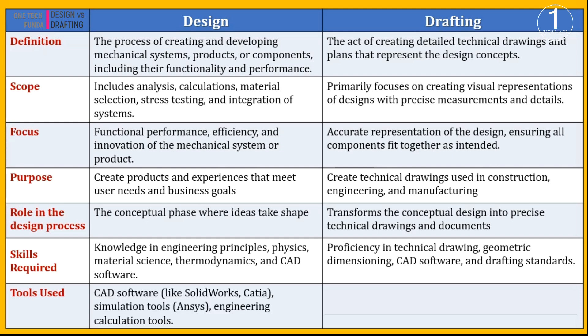In design, CAD software like SolidWorks and CATIA, along with simulation tools like ANSYS, are essential. They help engineers create, test, and refine their designs with precision and efficiency. In drafting, CAD software like AutoCAD and DraftSight, along with manual drafting tools like rulers and compasses, are used to create accurate technical drawings.